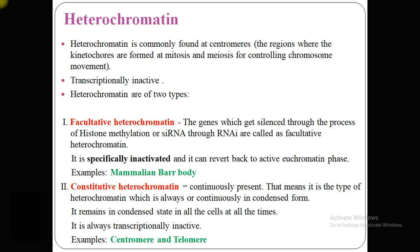Heterochromatin is mainly divided into two parts: facultative heterochromatin and constitutive heterochromatin. Facultative heterochromatin refers to genes that get silenced through the process of histone methylation, siRNA (small interference RNA), or RNA interference. These are specifically inactivated and can revert back to the euchromatin phase. The best example of facultative heterochromatin is mammalian Barr bodies, which will be explained in the next slides.